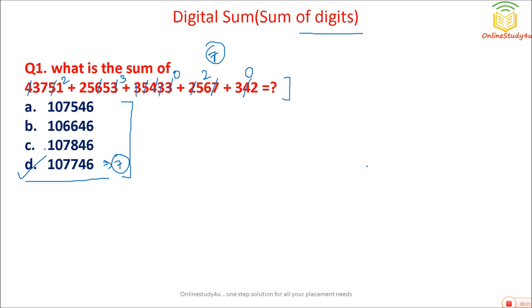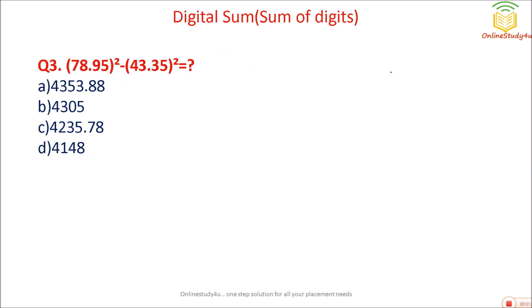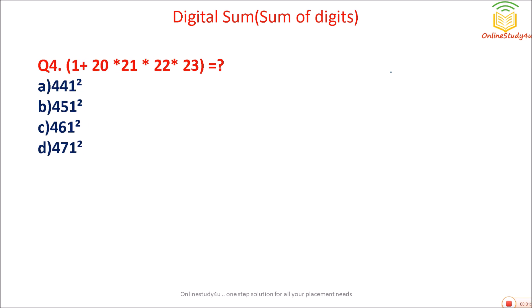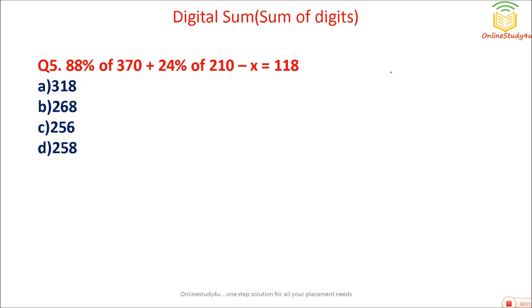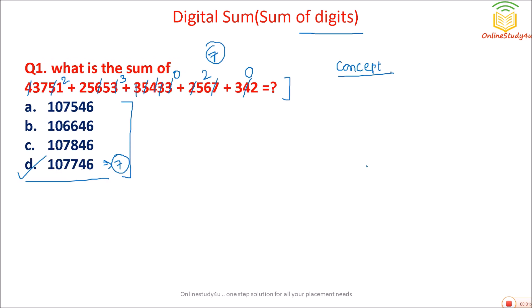With the help of digital sum we can really solve problems in seconds. Today I am going to discuss five types of problems: how to calculate squares using digital sum, simplification problems using digital sum, more complex problems, and one problem from percentage.